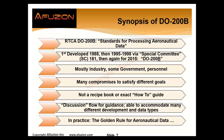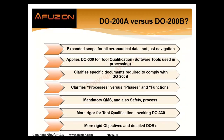The committee was mostly industry with some government people. There are many compromises to satisfy the different goals of data users. It's not a recipe book or an exact how-to guide to make data. It's a discussion flow for consistent, accurate, provable quality data creation, changes, processing, assessing, and transmitting — able to accommodate many different data types, but in practice, it really is the golden rule for aeronautical data.